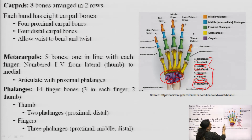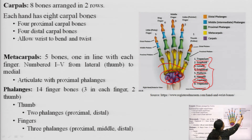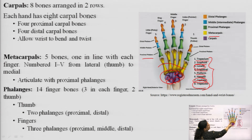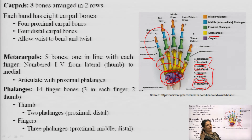After the carpals, we have five metacarpal bones in the palm area arranged in a line with each finger, numbered 1 to 5 from the lateral thumb to the medial side. These metacarpals articulate with the proximal finger bones, the phalanges. The phalanges consist of 14 finger bones — three in each finger and only two in the thumb.